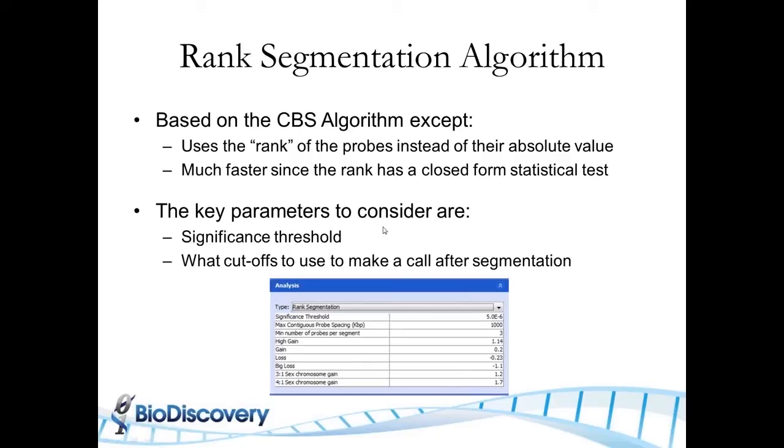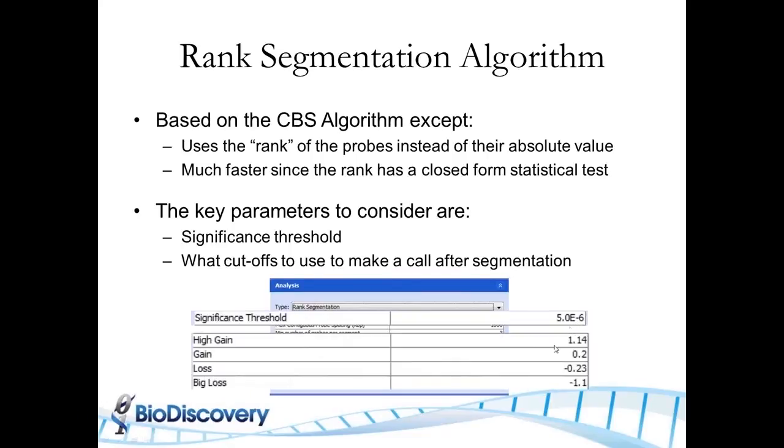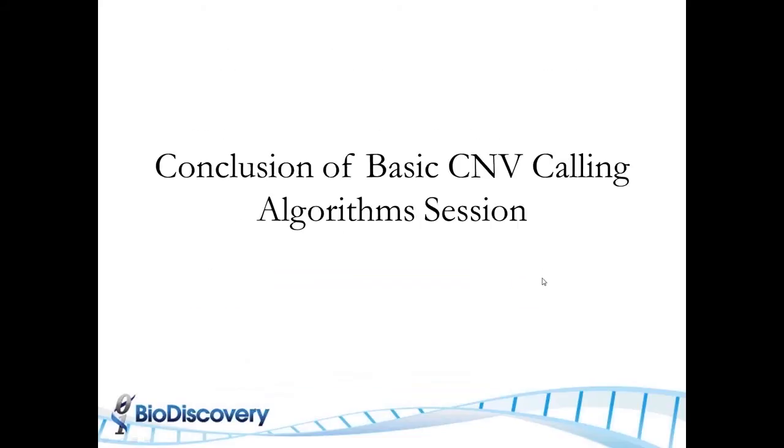So with rank segmentation, there are two sets of key parameters. The most important is the significant threshold. So this controls how many segments you end up with, how significant they have to be before it separates. And then the thresholds for making gain and loss calls.